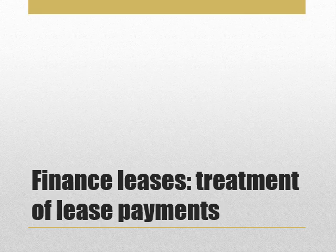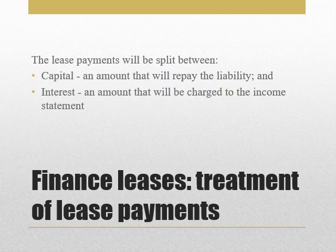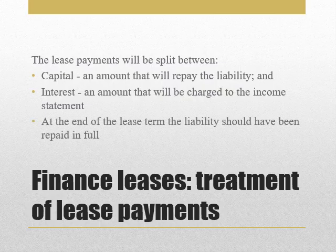When we start paying lease payments, the payments are split between a capital component — an amount that repays the liability — and an interest element. The capital element is set against the liability and the interest element is charged to the income statement, recorded in the finance cost section of the statement of profit and loss. At the end of the lease term, the liability should have been repaid in full, so we calculate our split of capital and interest to ensure that happens.